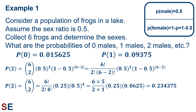Returning to our example, we've already calculated the probability of seeing 0 males or 1 male. Now let's calculate the probability of seeing 2 males when we choose 6 frogs. This would be 6 choose 2 times 0.5 to the second power times 1 minus 0.5 to the 6 minus 2 power. The 6 factorial in the numerator and the 4 factorial in the denominator reduce to just 6 times 5 divided by 2 factorial, which is 2 times 1. The 0.5 squared is 0.25, and 0.5 to the fourth power is 0.0625. Multiplying all this together gives us 0.234375.